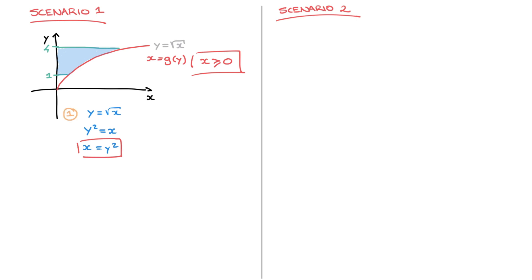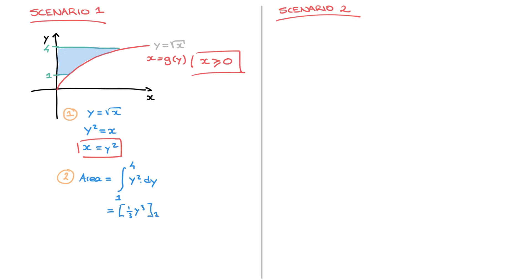Now that's done, I move on to step two. In step two, I calculate this area by evaluating the following integral. Area equals the definite integral from one to four — remember, we're calculating the area enclosed by the curve and the y-axis between y equals one and four — and that's the integral of y squared, integrating with respect to y, so I write dy.